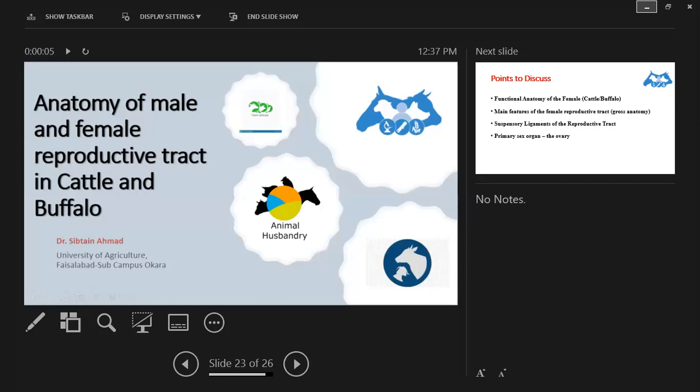And these are uterine horns which lead towards uterus, and then is this portion which is known as the cervix, and the next portion is vagina. And at the end is vulva, which is basically the external opening of reproductive tract of the female.